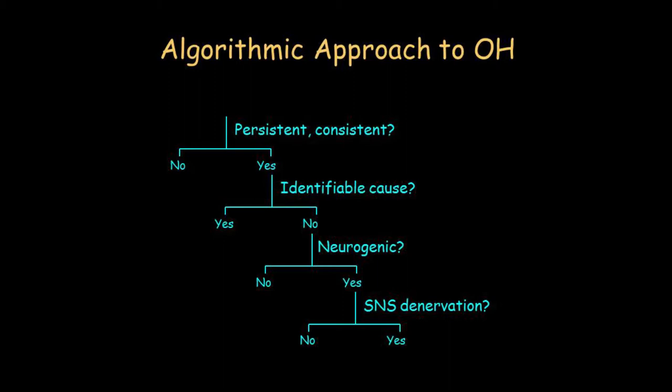Then I ask whether the orthostatic hypotension is neurogenic. One way to tell if it's neurogenic is from the Valsalva maneuver — the progressive fall in blood pressure in phase two, and the slow recovery of blood pressure in phase four. The fourth step, which is more research-oriented but clinically important, is whether the neurogenic orthostatic hypotension is associated with sympathetic denervation.